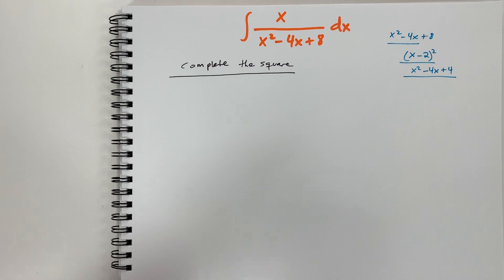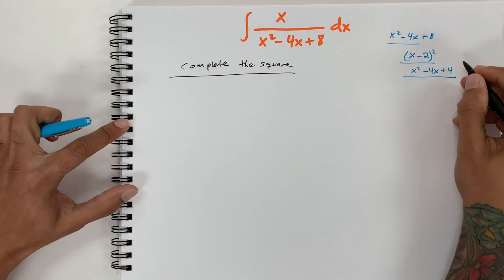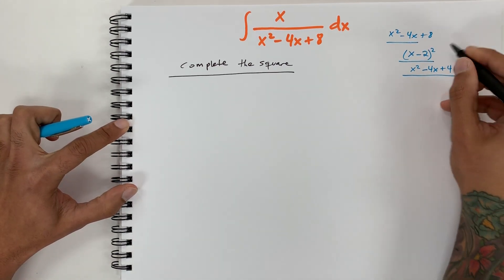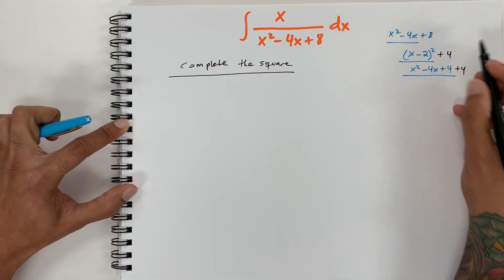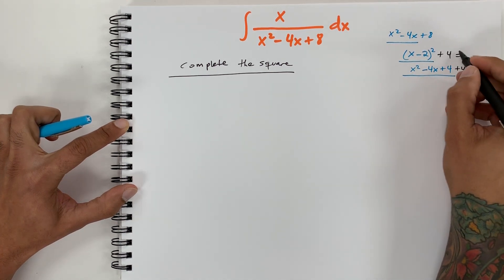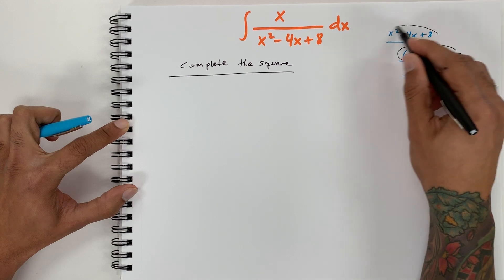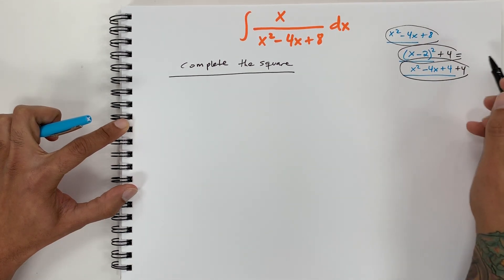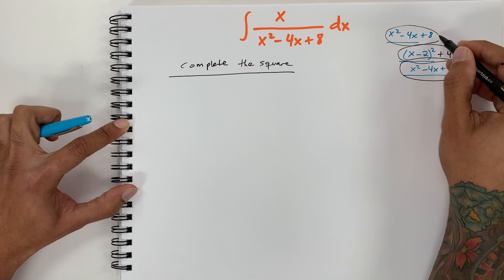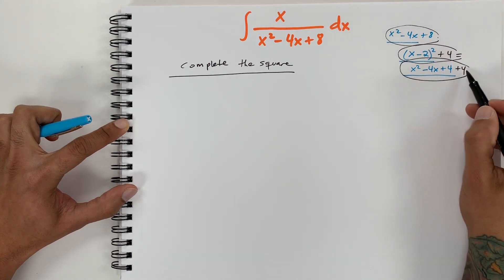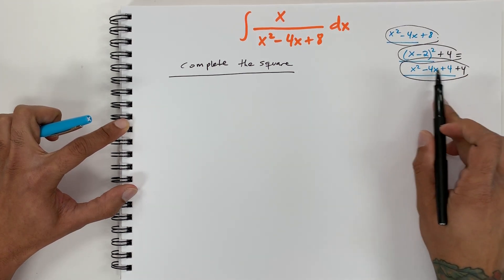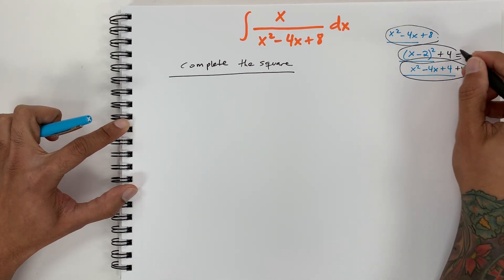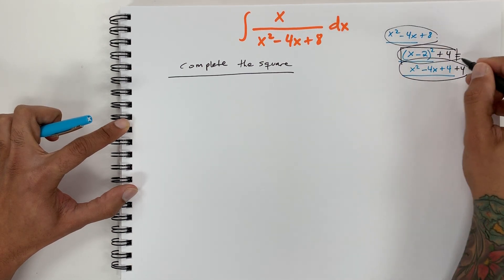We need a plus 4 on the outside in order for this whole thing to equal the original expression. So (x minus 2) squared plus 4 equals the original x squared minus 4x plus 8, because 4 plus 4 is 8 and the middle term matches.